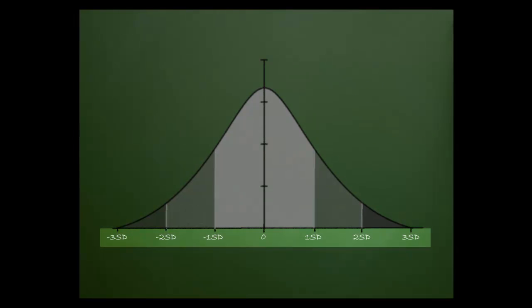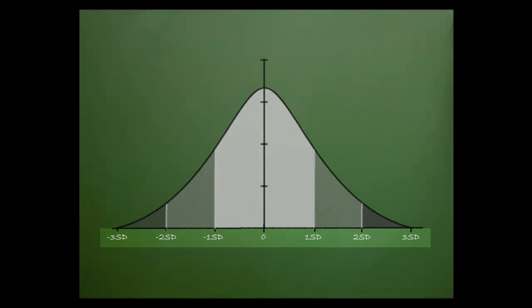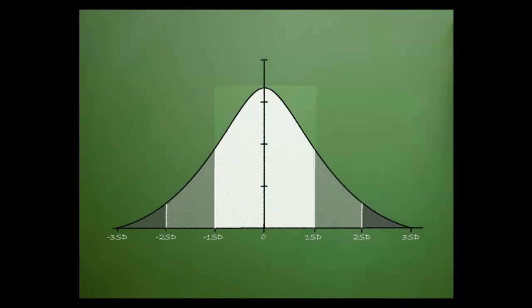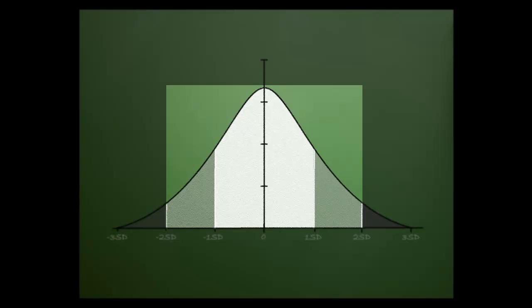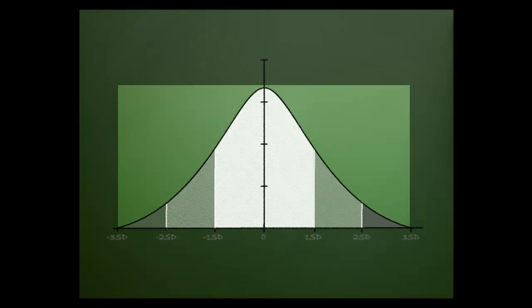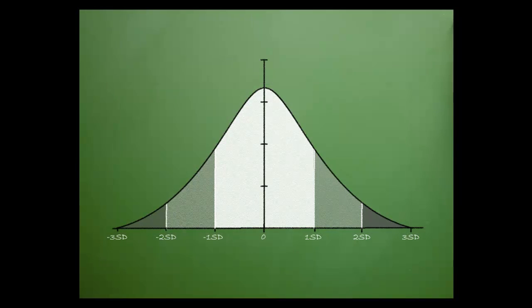These zones are known as 1, 2, and 3 standard deviations. That is, 1 SD includes 68% of the values produced, 2 SD includes 95.5% of the values produced, and 3 SD includes 99.7% of the values produced.